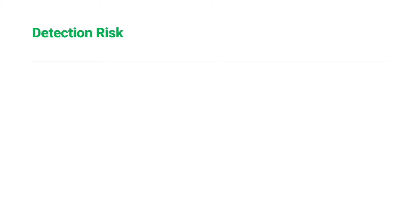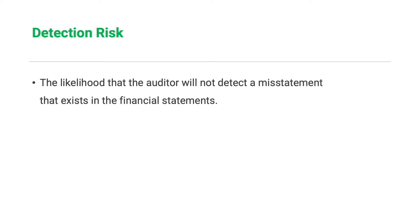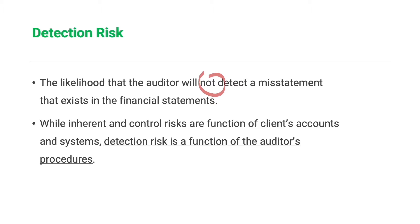The last component is detection risk, which is the likelihood that the auditor will not detect a misstatement that exists in the financial statements that could be material either individually or in aggregate with other misstatements. Detection risk is a function of the effectiveness of the audit procedure and its application by the auditor. While inherent and control risk are functions of the client's accounting records and system, detection risk is a function of the auditor's procedures.